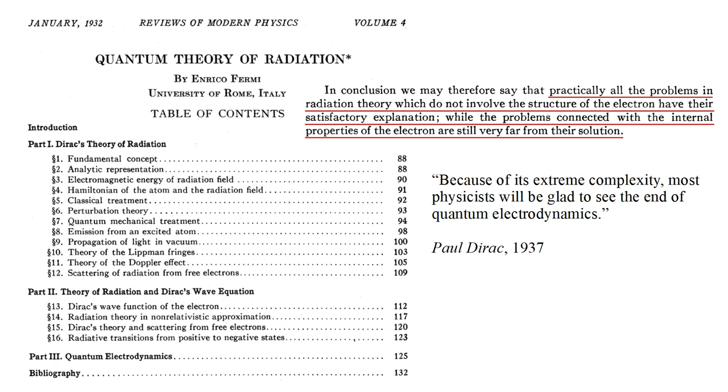In 1937, Dirac proclaimed, because of its extreme complexity, most physicists will be glad to see the end of quantum electrodynamics.